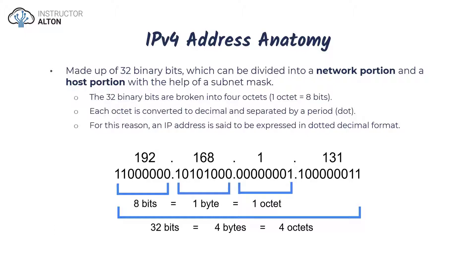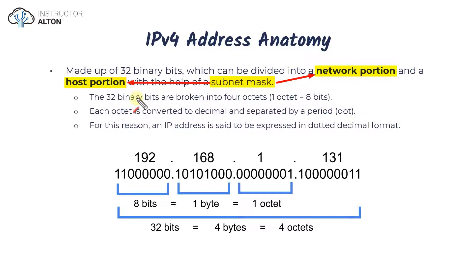An IP address has two different sections: a network portion and a host portion. There's a portion that identifies the network it's on, and a portion that identifies the host. To determine this, we use something called a subnet mask. The IP address combined with the subnet mask tells us what portion is the network portion and what portion is the host portion — you'll understand this as we progress through the lectures.